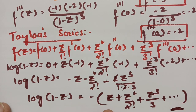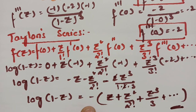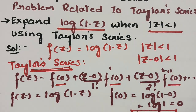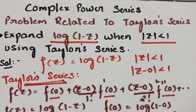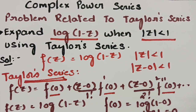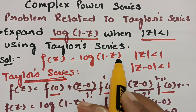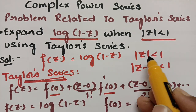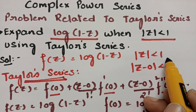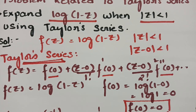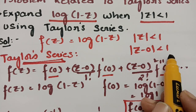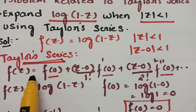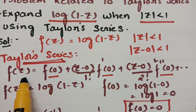This is how we expand log(1 - z) using the Taylor series. It is straightforward: f(z) = log(1 - z) with |z| < 1, giving the expansion minus common of z + z²/2 + z³/3 + and so on.